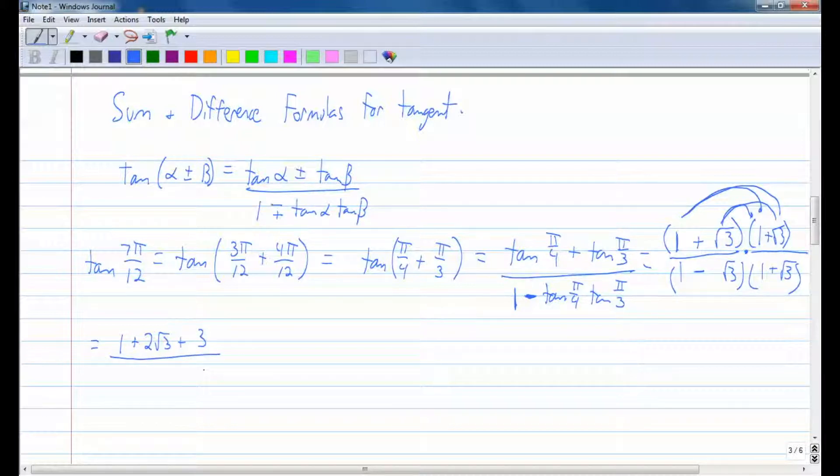When you multiply conjugates out, all you have to do is multiply the first terms and the last terms because the inner terms and outer terms will cancel out. So 1 times 1 is 1. Negative square root of 3 times a positive square root of 3 is going to be negative 3.